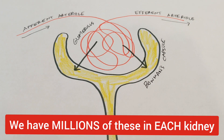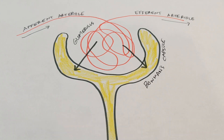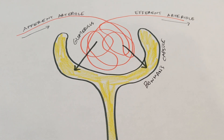This is in the cortex of the kidney. What's happening is materials — especially water, but also some urea, waste, electrolytes, glucose, and some medications — are being filtered out of the blood at the glomerulus and going into Bowman's capsule. Once they go into Bowman's capsule, they become part of what's called the filtrate.